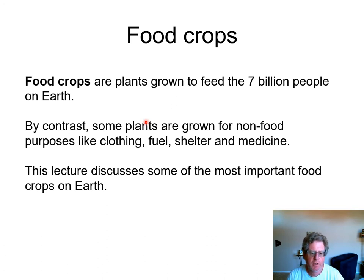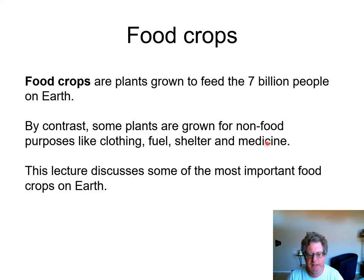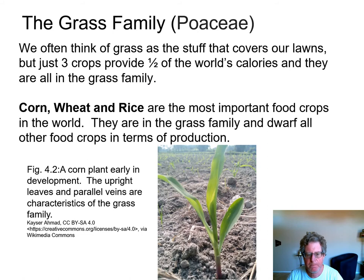There are lots of reasons to grow plants — maybe grass in your backyard, trees used to make fuel, wood to build houses, or medicine. But we're going to focus this lecture on food crops, plants that are grown as food. And like we just said, half of all the plants that feed the world are in the grass family. Here's a young corn plant — it looks kind of like grass at this stage. As it gets bigger, it looks less grass-like, but it's very upright, has parallel veins, and it's a monocot.